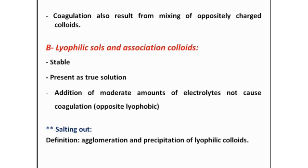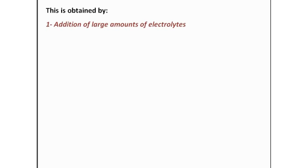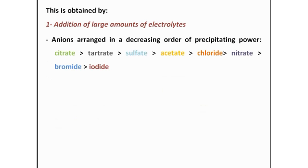However, adding more than a moderate amount is problematic. This leads to the concept of salting out, which means agglomeration or precipitation of lyophilic colloids. If we add electrolytes to a lyophilic colloidal system and the colloids separate from the dispersion medium — settling at the bottom while the dispersion medium remains on top — this is known as salting out. It is obtained by addition of large amounts of electrolyte. Anions are used for salting out, with the highest salting-out power shown by citrate, followed by tartrate, sulfate, acetate, chloride, nitrate, bromide, and iodide.